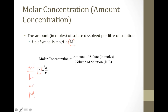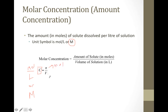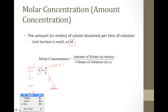Big C is equal to N over V, where N is our amount of substance in moles, and V is our volume. It's really important that the value for volume is in liters. If we're given a question where the volume is in milliliters or any other unit, we will have to convert it into liters.